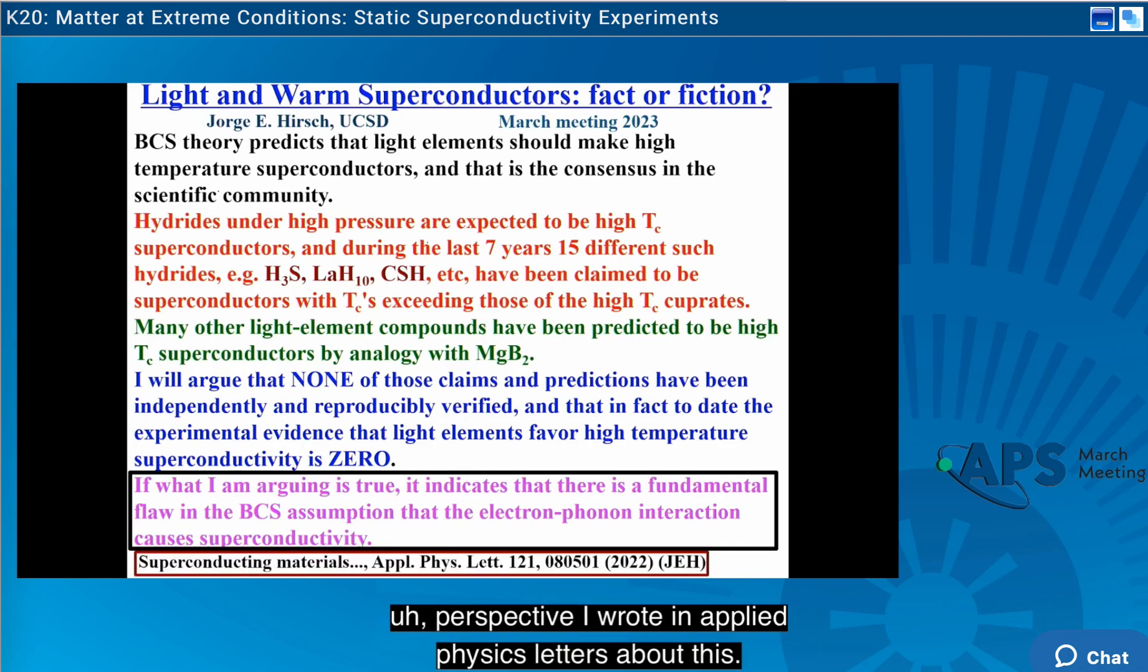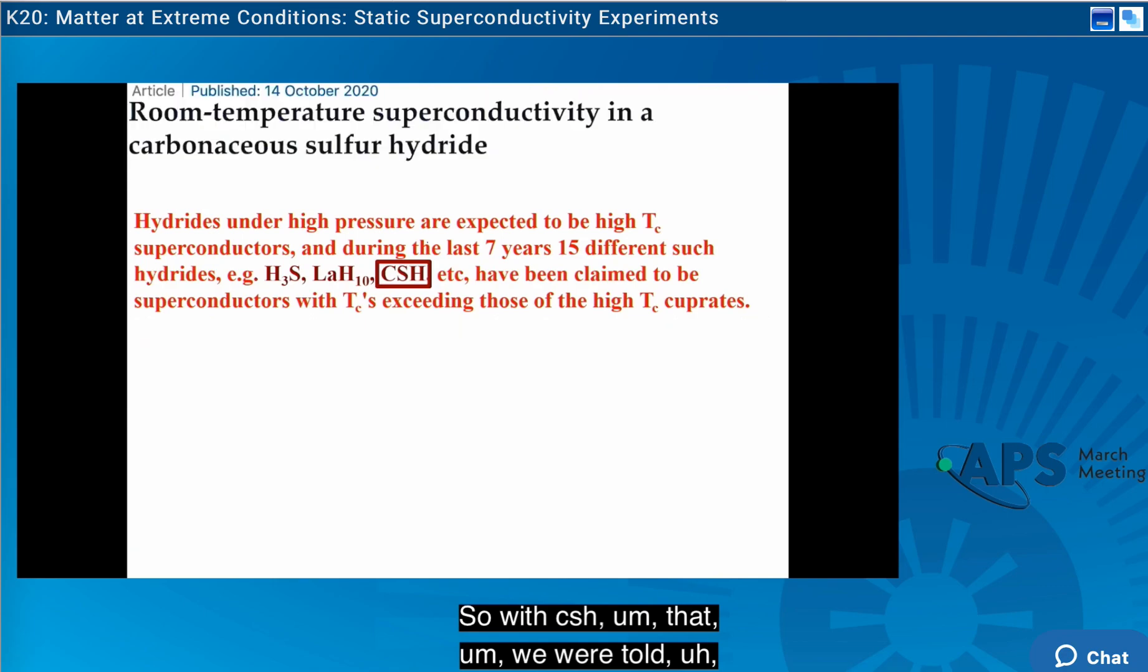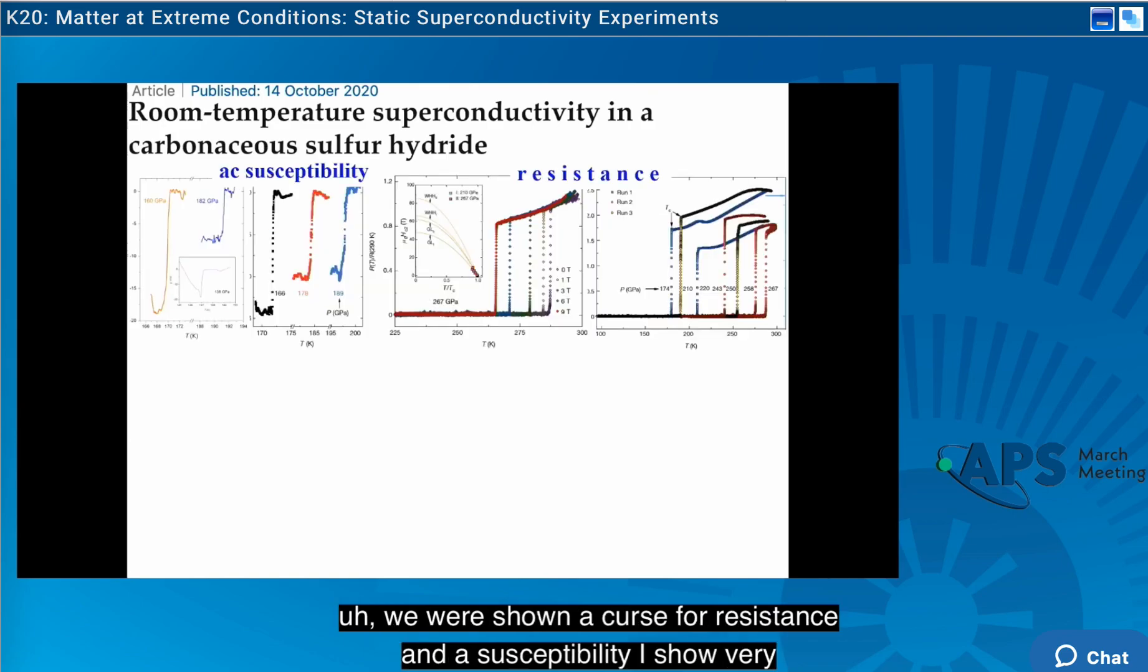This is a recent perspective I wrote in Applied Physics Letters about this. So let's talk about CSH. We were told two years ago that it was a room temperature superconductor, and we were shown curves for resistance and AC susceptibility that showed very compelling evidence for superconductivity.